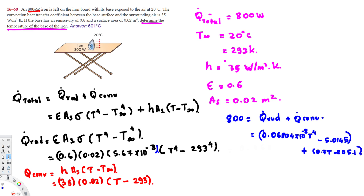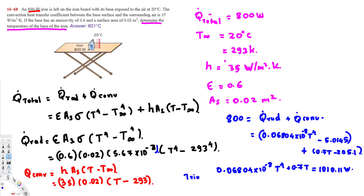Simplifying further, we get: 0.06804 times 10 to the power of minus 8 times T to the power 4, plus 0.7T equals 1010.11 watts. Using the trial and error method, we get T equals 874 Kelvin, which is equal to 601 degrees Celsius.